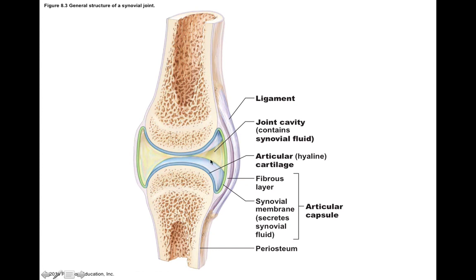We also see supporting ligaments such as this extracapsular ligament, which we know is extracapsular because it's found outside of the joint. If there were ligaments inside the joint cavity, we would call those intracapsular ligaments, but they're not shown here.